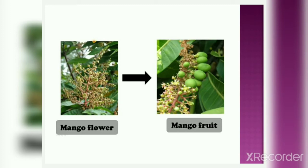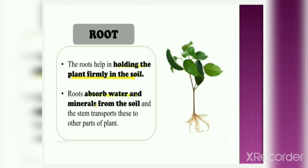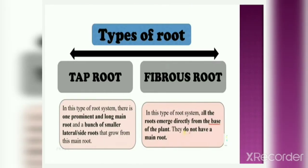Now we will study about roots. Till now we had studied about the shoot system which consists of stem, leaves, and flowers. The roots help in holding the plant firmly in the soil. Roots absorb water and minerals from the soil and the stem transports these to other parts of the plant. There are two types of root: tap root and fibrous root.